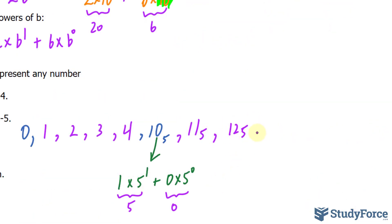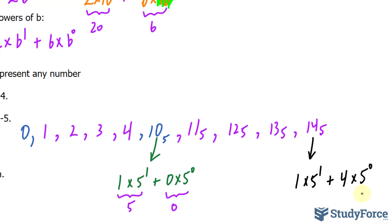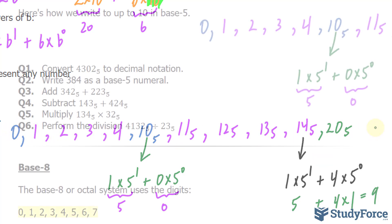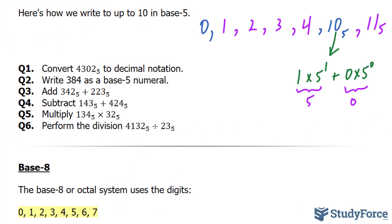Continuing: 12 sub 5, 13 sub 5, 14 sub 5. In case you got confused, let's figure out what 14 sub 5 actually equals. That's the same thing as saying 1 times 5 raised to the power of 1 plus 4 times 5 raised to the power of 0. That gives us 5 plus 4 times 1, which is 4, summing to 9. Finally, to write down the number 10, we say 20 sub 5, and the same logic applies. So here's how you write numbers between 0 and 10 in the base 5 system.